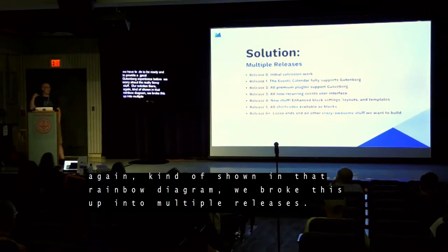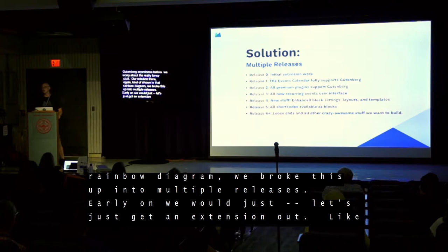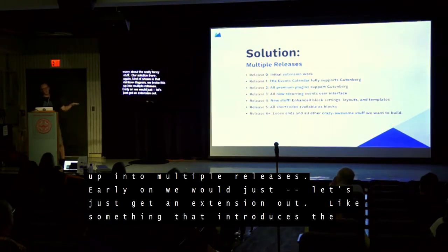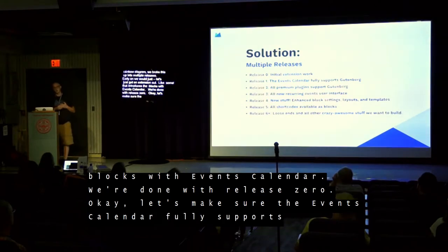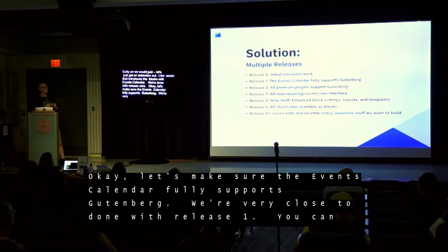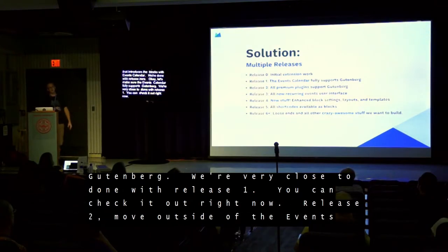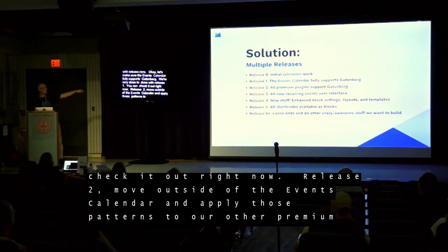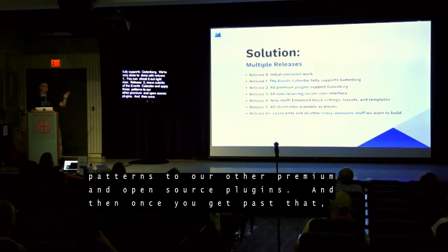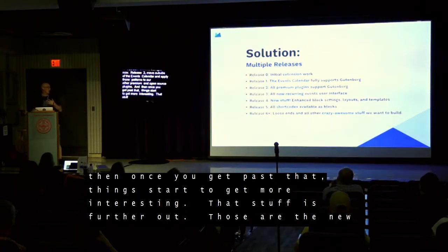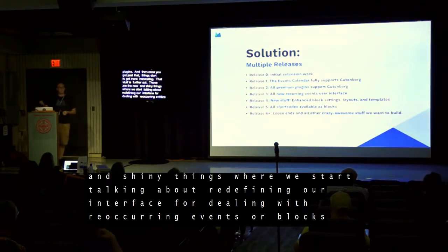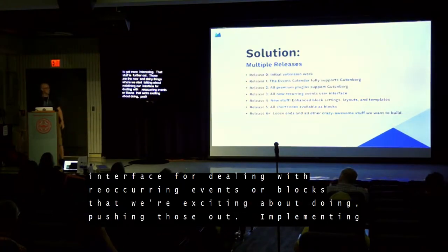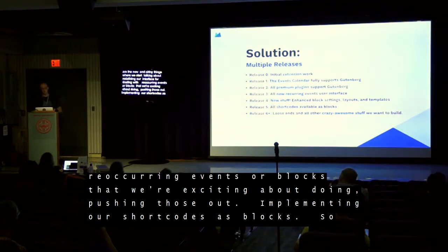Early on, we'd just get an extension out — something that introduces the concepts of blocks for the Events Calendar, works with our post types. We're done with release zero. Then we said let's make sure the Events Calendar fully supports Gutenberg. We're very close to done with release one — you can go check it out right now. Release two is where we start to move outside of the Events Calendar and apply those patterns to all of our premium plug-ins and other open source plug-ins. And then once you get past that, things start to get more interesting. That's the new and shiny things — redefining our interface for recurring events, fancy layouts, advanced block settings, implementing all of our short codes as blocks. Breaking it down into multiple release phases was something that was very helpful.